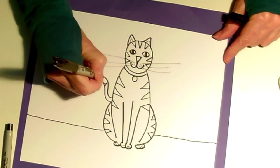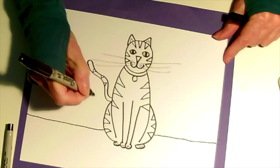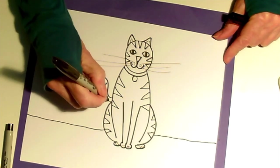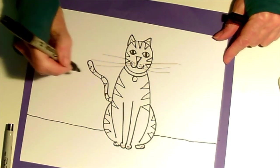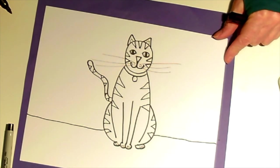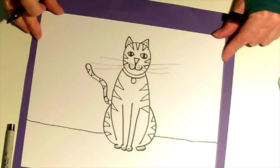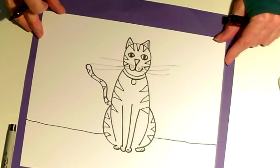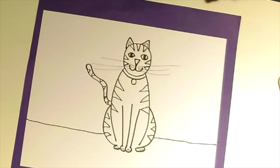And some stripes along the tail. I'm liking the way he looks or she looks, and then you can color it in any way you want. I hope you enjoyed this tutorial and I'll see you again soon.